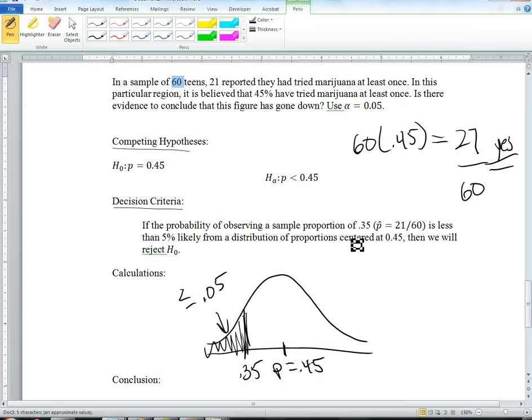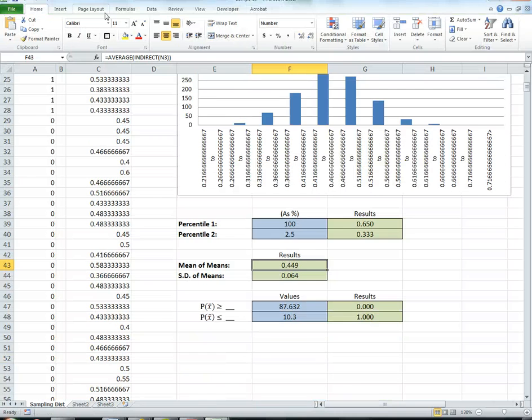So now I'm going to look for what is the probability of observing 0.35 or less? In other words, what proportion of all of these are 0.35 or less? So I'm going to do probability that x is less than or equal to 0.35, and I get 0.083.